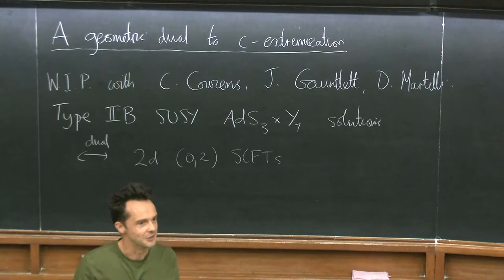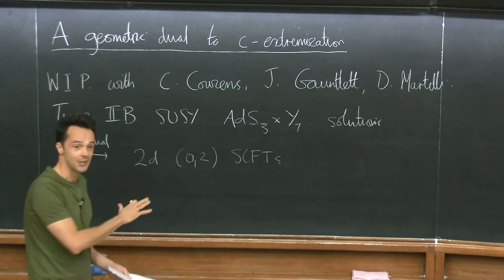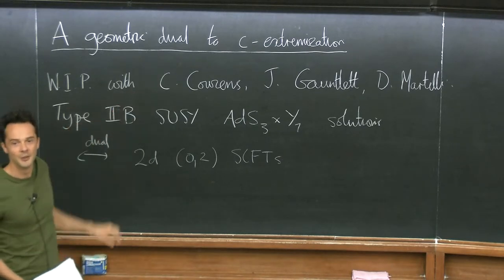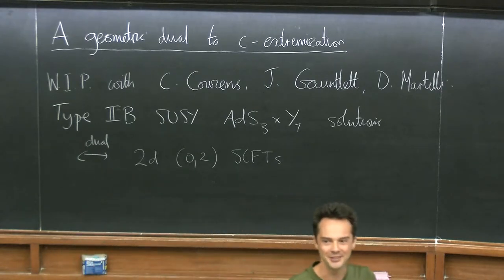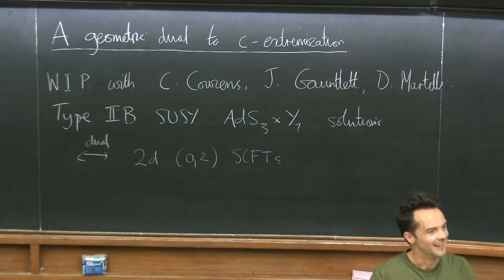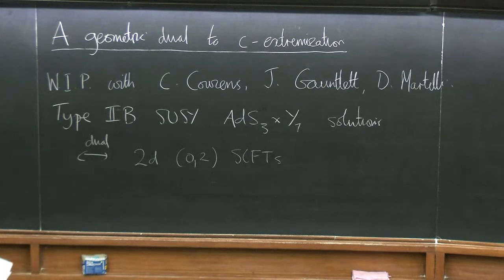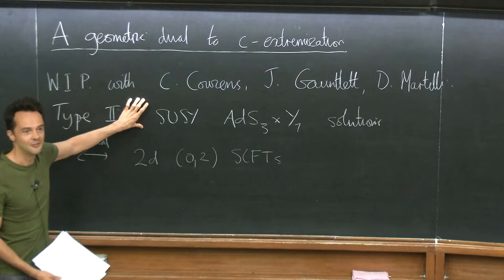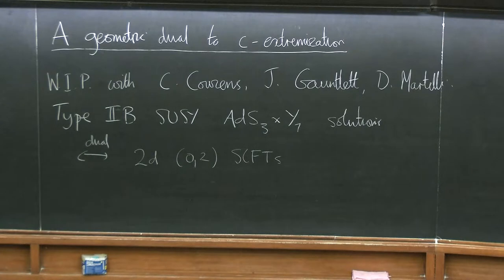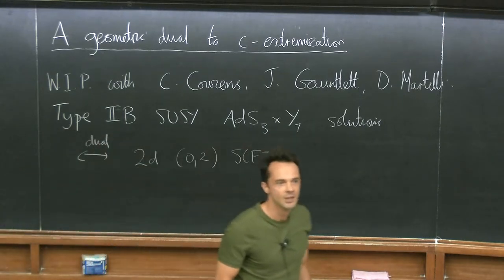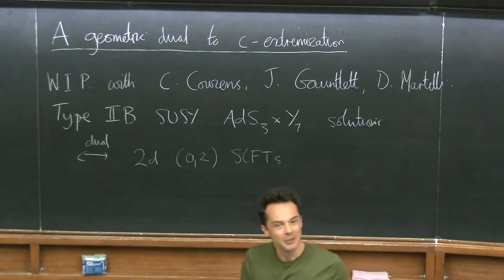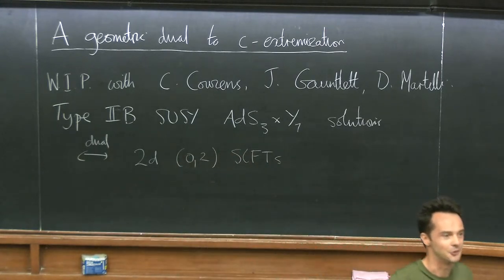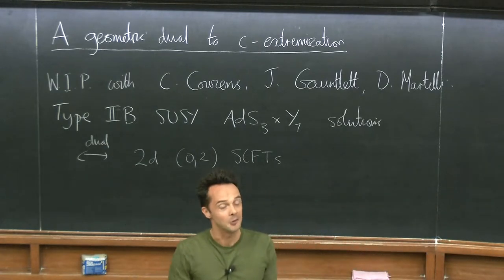Whenever you can do these kinds of exact calculations of protected quantities in the field theory, I think there should also be an analogous calculation you can do on the gravity side. A priori, that's not obvious — usually in supergravity you have to solve the Einstein equations, which are nonlinear coupled PDEs. However, I think you should be able to compute protected quantities on the gravity side without knowing the full solution. You've still got some PDE to solve, but you need some existence theorem. The analogy to have in mind is Yau's theorem for Calabi-Yau metrics — we don't know any explicit solutions on compact Calabi-Yau manifolds, but we can still compute lots of things with them.